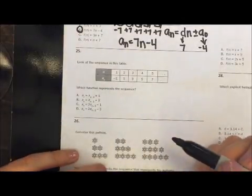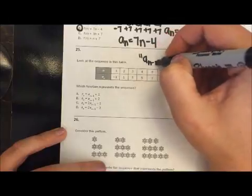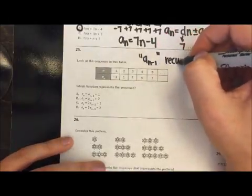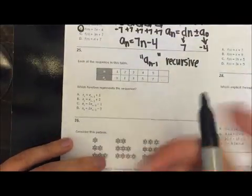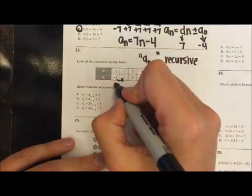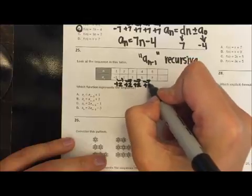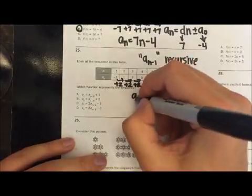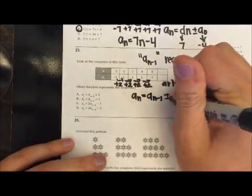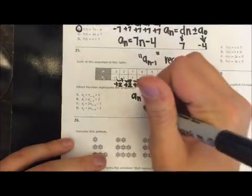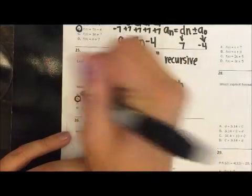So looking at number 25, I can see that my options are recursive, meaning it has a sub n minus 1 in it, and recursive means that this little a sub n minus 1 means you have to go beforehand. You have to have the term beforehand. So again, my term numbers and then my term values look like I'm adding 2. So again, arithmetic, and recursive formulas say, hey, just look at the term beforehand, so a sub n minus 1, and then add or subtract whatever pattern you're doing. So in our case, we are adding 2, and that looks like our option B.